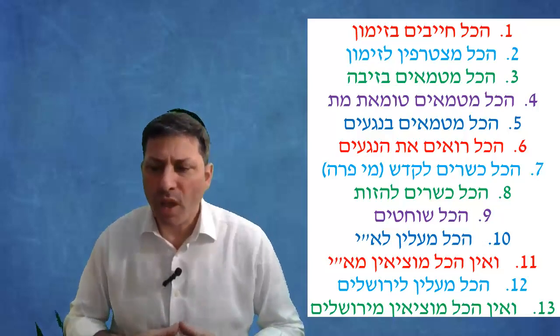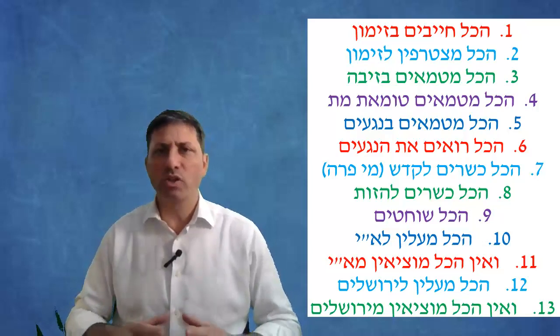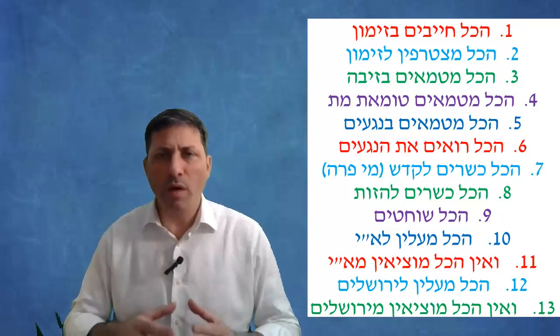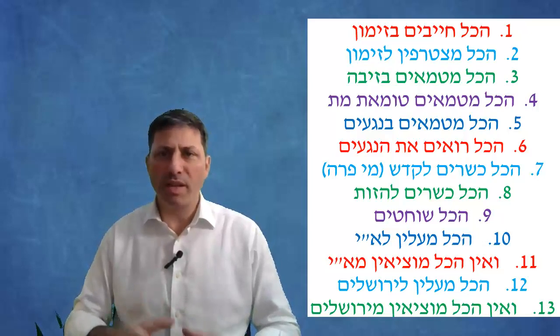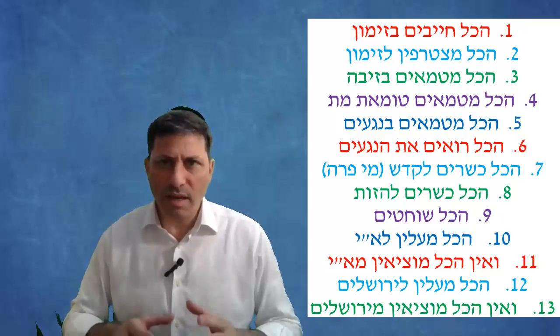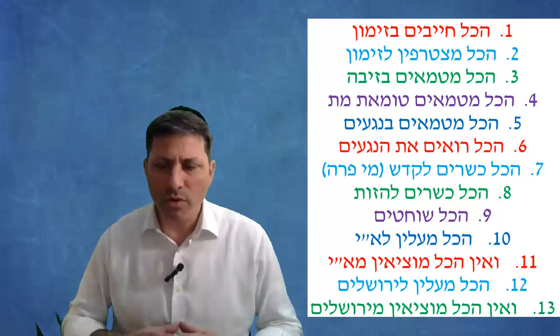It also says hakol mitzaref l'zimun - anybody could join the zimun. As we just said a woman can't, what does it come to include? It comes to include a minor, a katan that understands who you're benching to. Although in the Yerushalmi it says that a minor is not mitzaref, you need to be a gadol, and that's actually a machloket the Mechaber and the Rama.